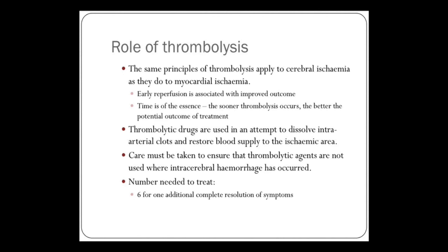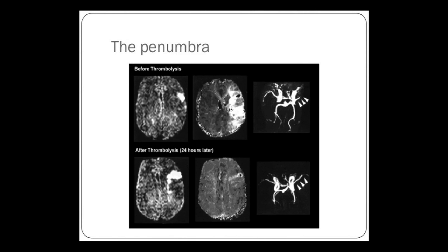If you are able to get to the patient before the three-hour time limit, the number needed to treat is such that if you thrombolyse six patients, one of those patients will have complete resolution of their symptoms and no functional deficit. This MRI scan illustrates a concept called the penumbra.